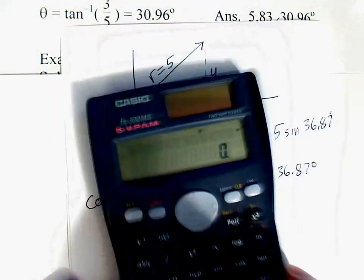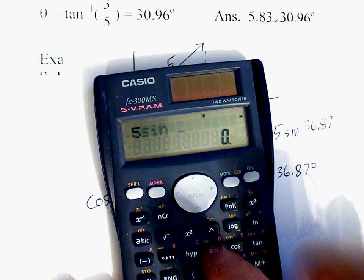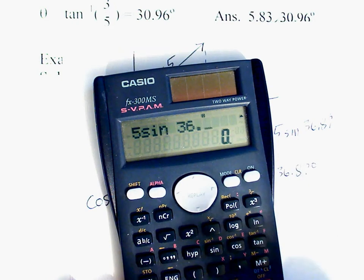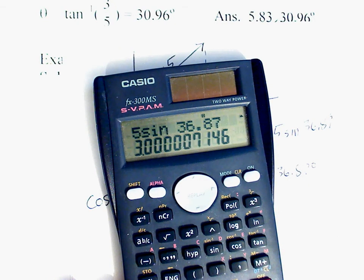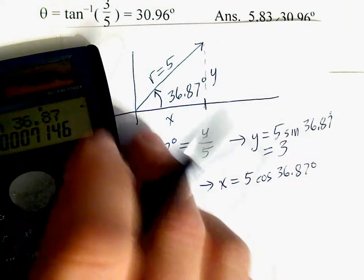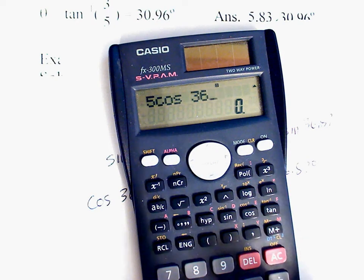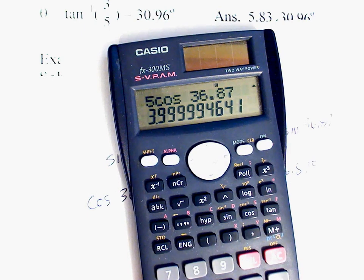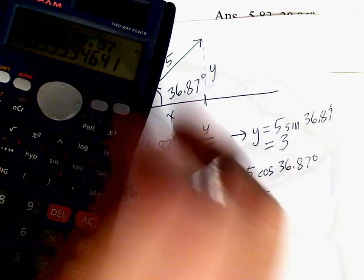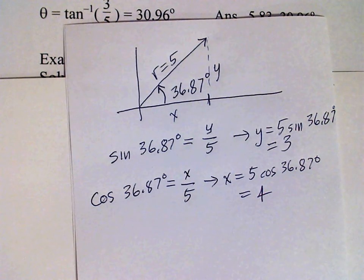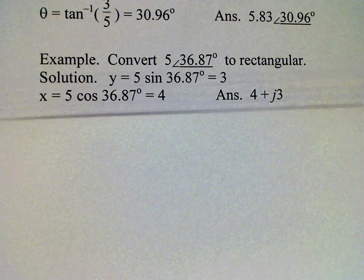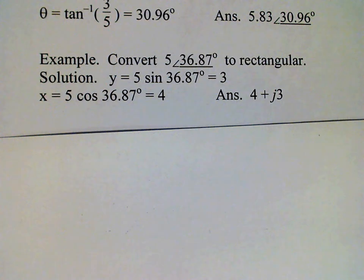Let's work out what each of those are. 5 times sin(36.87°), and the answer is 3. And then x is 5 times cos(36.87°), which equals 4. 3² plus 4² equals 5², so that provides a little check. The answer is 4 + j3 in rectangular form.